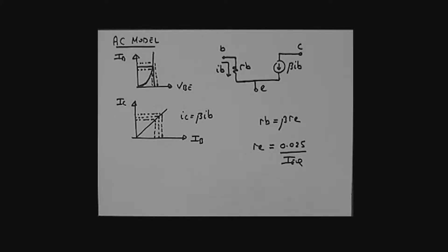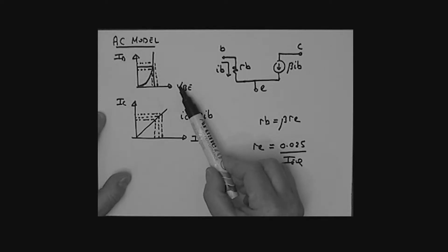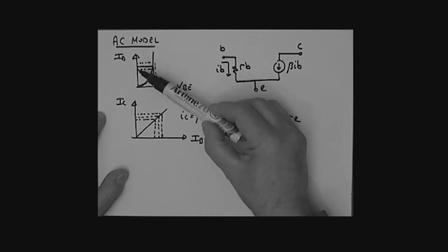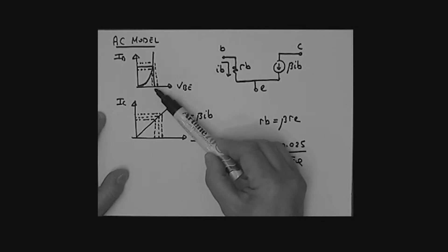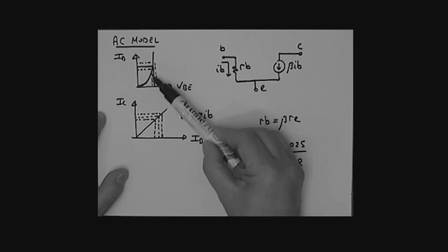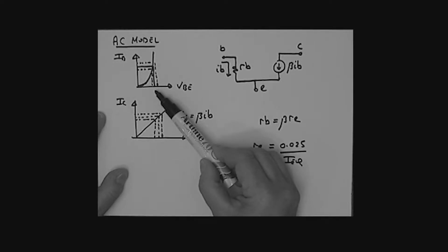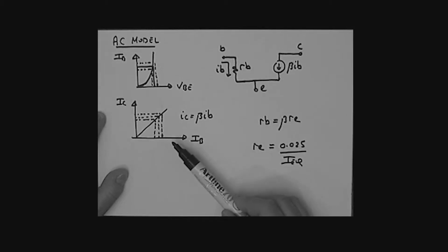Let's continue. I hope you had a chance to look at what we've done before and understand how we derived our AC model for the transistor. We were looking at the input characteristics, IB versus VBE — that exponential curve. For DC analysis we assume 0.7V, but now we're coming up with an AC model. We look at the change in base current, little IB, producing a change in base-emitter voltage, little VBE, around the quiescent values. If this change is linear, we can model it with a resistor called RB.